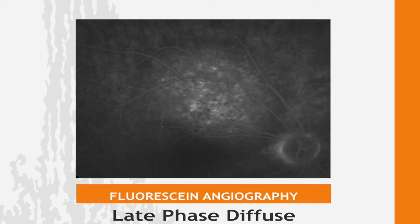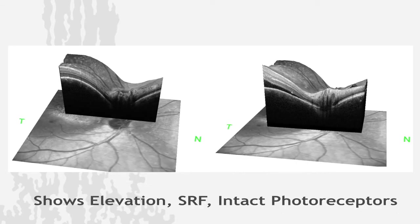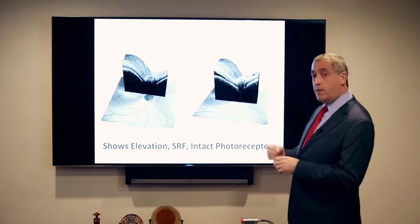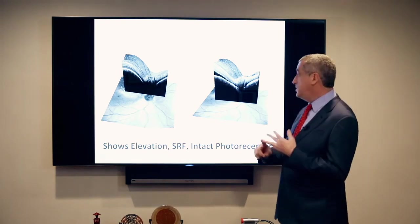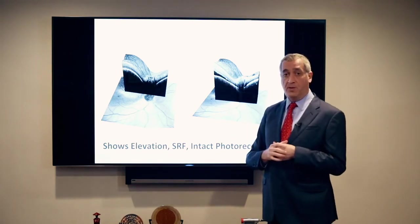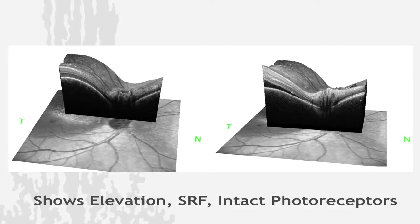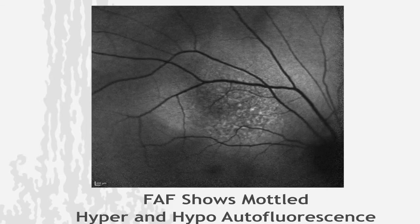On the OCT, you'll see the subretinal fluid — OCT is one of the most sensitive methods for finding subretinal fluid. But remember, with both melanoma and metastatic lesions you had dysmorphic photoreceptors, but in this tumor — which is not giving off the same toxins — the photoreceptors look relatively intact. Here's a fundus autofluorescent image showing some mottled hyper-autofluorescence associated with this hemangioma.